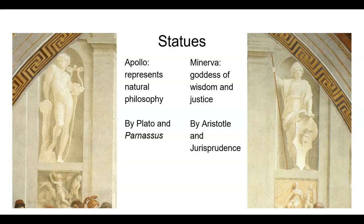Raphael painted two statues in the background. The one on the left is Apollo, which Raphael positioned near Parnassus, representing literature. Minerva, the goddess of wisdom and justice, is closer to jurisprudence, the fresco focused on law. Touches of symbolism in Raphael's artworks came to characterize the social shifts in ideas and set them apart as topics of conversation for educated nobles.